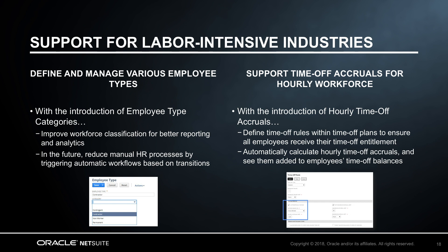Services, warehouse, and manufacturing are examples of industries with a high number of hourly workers. With the 19.1 release, NetSuite can support these labor-intensive industries. Employee type categories, such as contingent and contract worker, improve your ability to classify your workforce for better reporting analytics. Like employee status categories, the introduction of type categories will eventually help you reduce manual HR processes by triggering automatic workflows. Industries such as services, warehouse, and manufacturing also tend to have employees that are paid based on the number of hours they work, meaning companies need the ability to automatically accrue time off based on hours and the employee's hourly accrual rate. With the 19.1 release, companies can define hourly accrual time off rules, which are used to automatically calculate employees' time off accruals. NetSuite's time off plans support fixed amount accruals based on annual entitlement, hourly accruals based on an hourly rate, and time off that's set as track only.